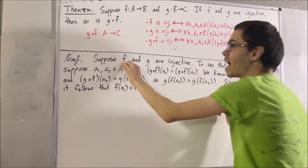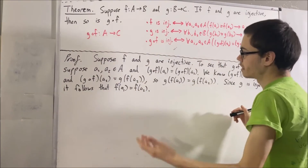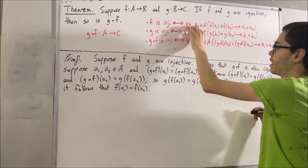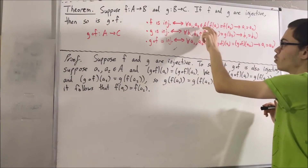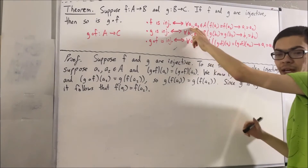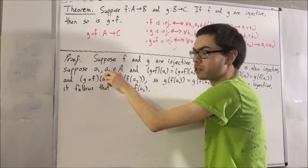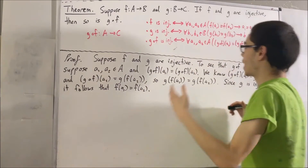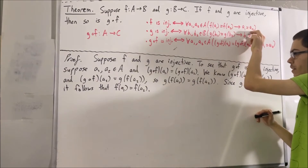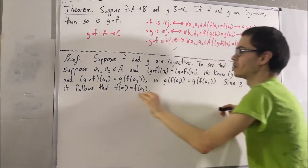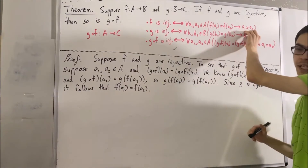Now we apply the fact that f is injective, which means for every two elements a1 and a2 in A, if f of a1 equals f of a2, then a1 equals a2. Since we just showed that f of a1 equals f of a2, we can conclude that a1 equals a2.